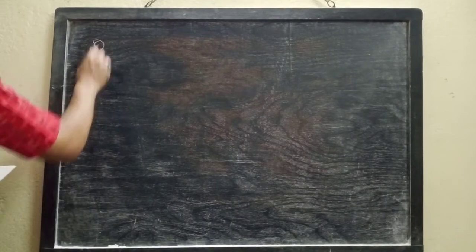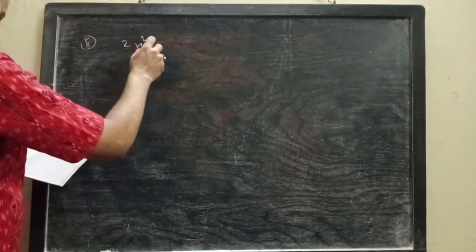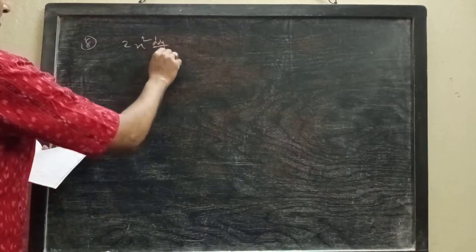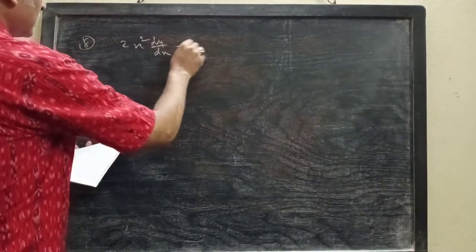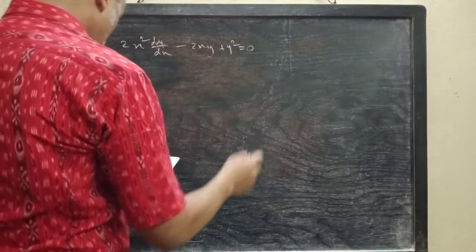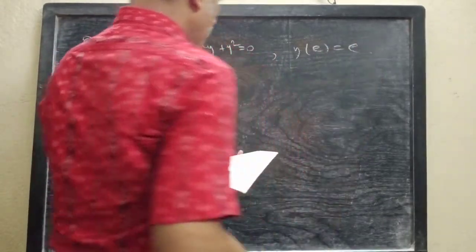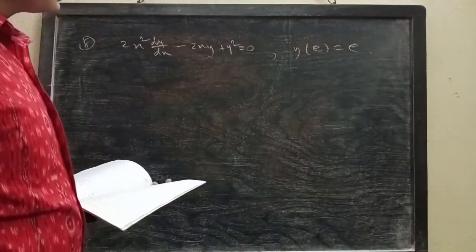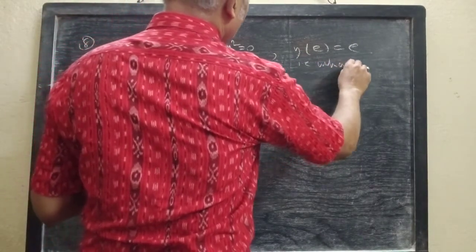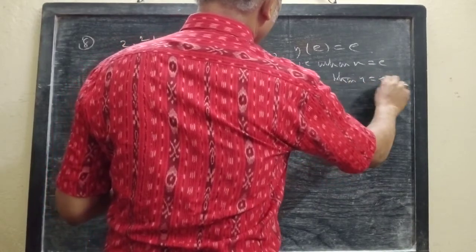Question number 8. The equation is 2x² (dy/dx) minus 2xy plus y² equals 0. The initial condition is given as y(e) = e, that means when x equals e, then y equals e.